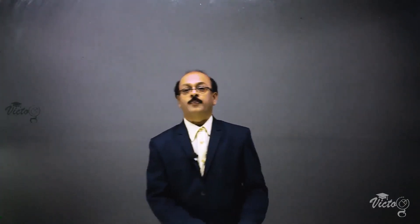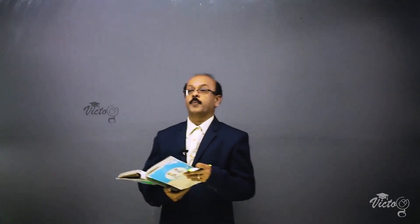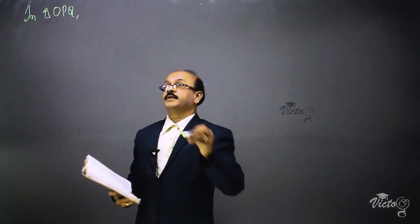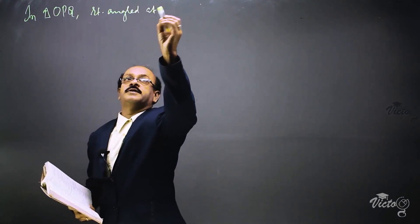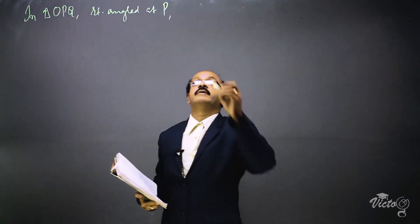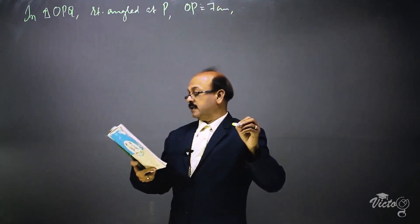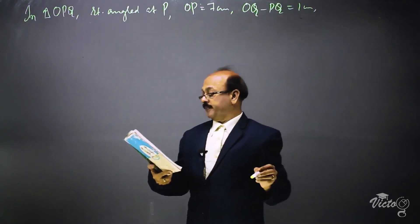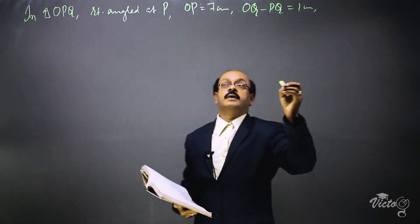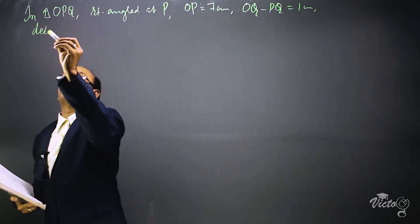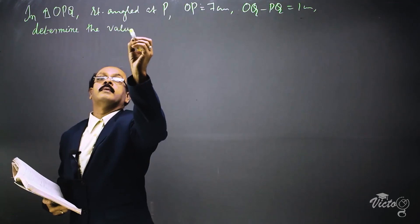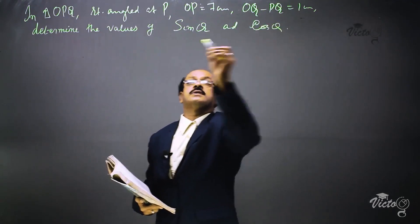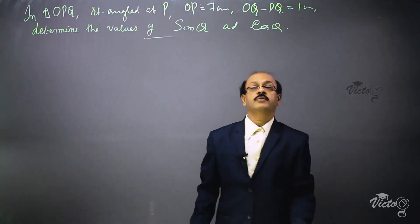We are going to solve the next problem. The question is: in triangle OPQ, right-angled at P, OP is equal to 7 centimeters, OQ minus PQ is equal to 1 centimeter. Determine the values of sine Q and cos Q.